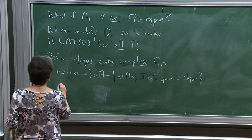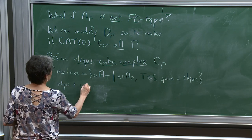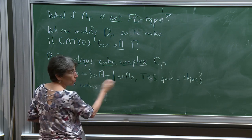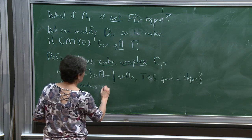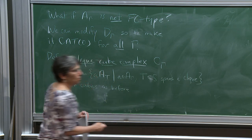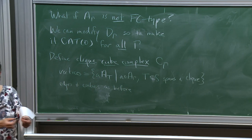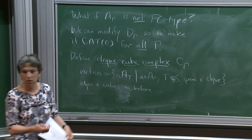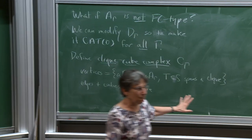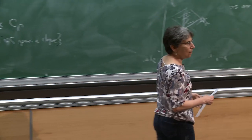It's more vertices, and the rest are the same: edges and cubes defined as before. An edge is where you add a single generator; a cube is where you add more than one. All I've done is added some extra vertices and consequently some extra cubes.